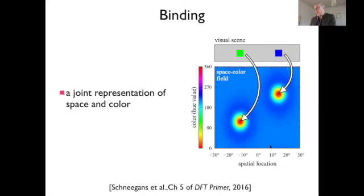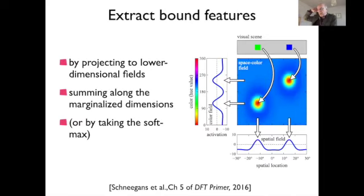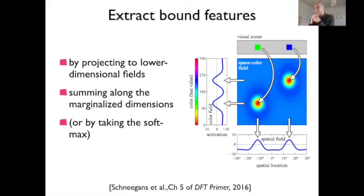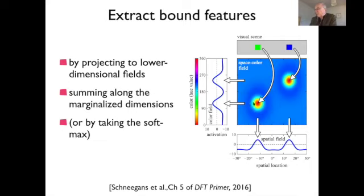You can answer questions like 'where is the green?' or 'what color is at this location?' When you have jointly represented features — bound them — you can also extract the individual features. It is not really unbinding, just extracting the bound value. For instance, you can marginalize by summing activation along the spatial axis, eliminating the spatial dimension, which leads to a peak depending only on the hue value — representing only the color.